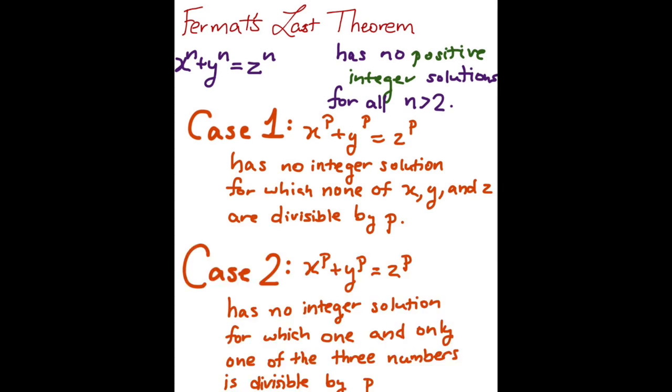In Case 2, x to the p plus y to the p equals z to the p has no integer solutions for which one and only one of x, y, and z are divisible by p.